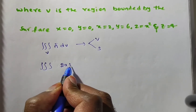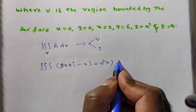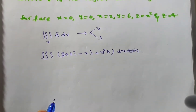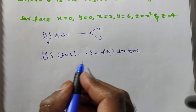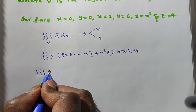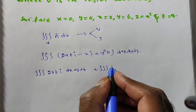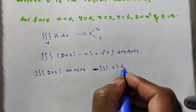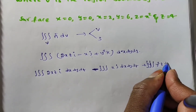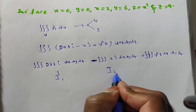We have to evaluate triple integral of a-bar, which is (2xz·i minus x·j plus y²·k) dv. Here dv in Cartesian coordinates is dx dy dz. Since the integrand has i, j, k components, this is a vector. We can separate it into three parts: integral one, integral two, and integral three.